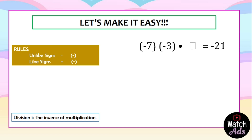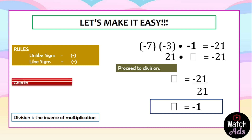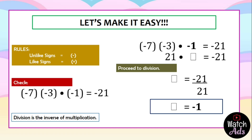We have another case with three factors. To make this easy, first multiply the two given factors: negative 7 and negative 3. The answer is positive 21 because they are like signs. Now we only have one factor missing. We proceed to division: divide the product negative 21 by 21, giving us negative 1. We check: negative 7 multiplied by negative 3 multiplied by negative 1. Negative 7 times negative 3 is 21, then multiplied by negative 1 gives negative 21. Our answer of negative 1 is correct.